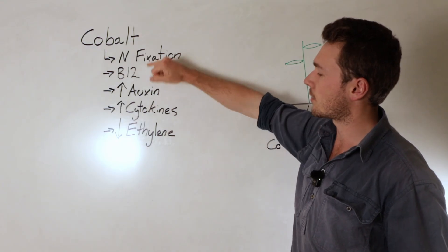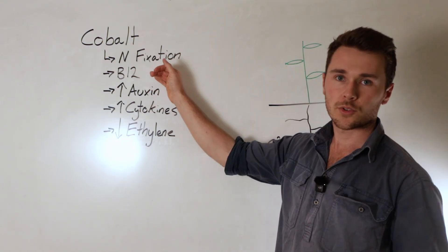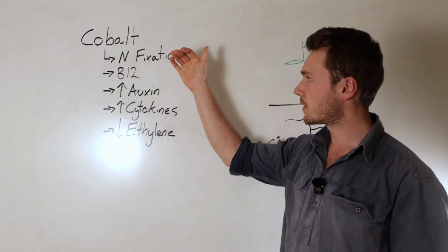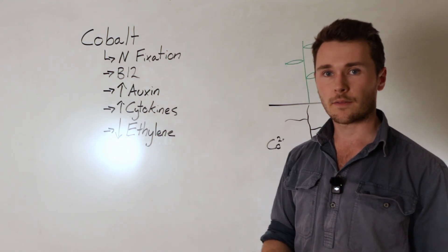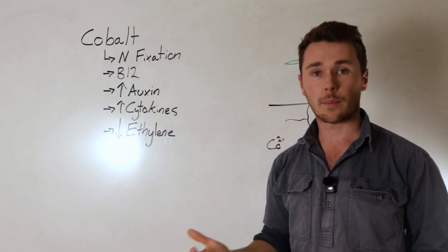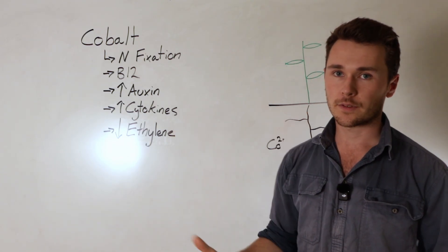So that's the first one. The second one is cobalt is required in B12, which is also required for nitrogen fixation. So the combination of these two things means that without cobalt you get some really interesting effects on the plant, and likewise when you apply cobalt you get some really great benefits.